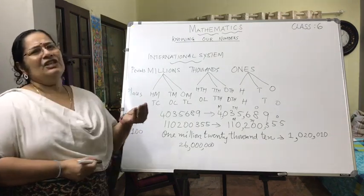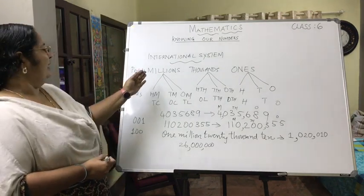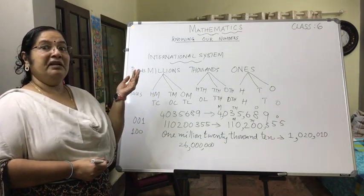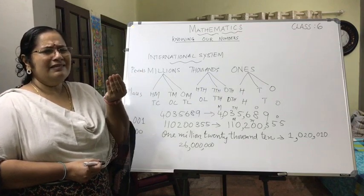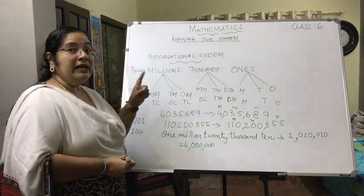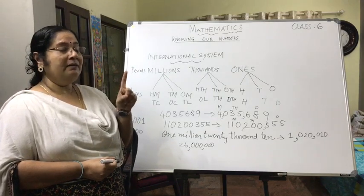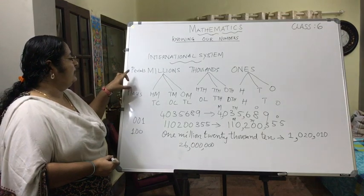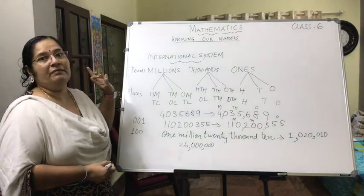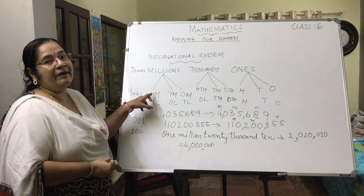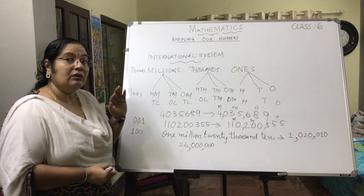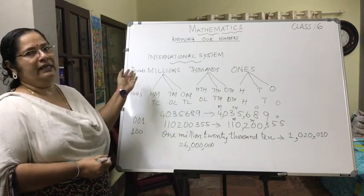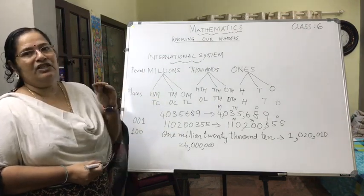As additional information: beyond millions there are also billions and trillions. One billion is equivalent to one thousand millions. We know up to 100 millions, so 1 billion = 1,000 millions. We are not going beyond millions in this lesson — just an additional piece of information for you.